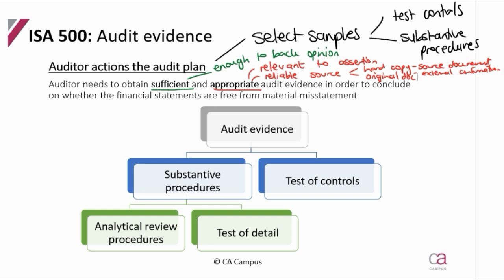Written is better than oral, and external is better than internal evidence — so from somebody outside corroborating what the inside people are saying. And it's now about getting this evidence: getting the substantive evidence and getting the test of controls.